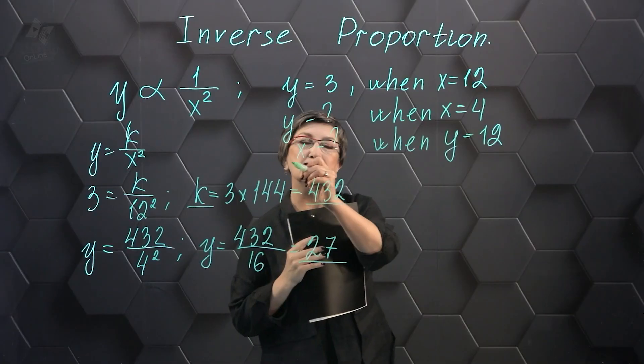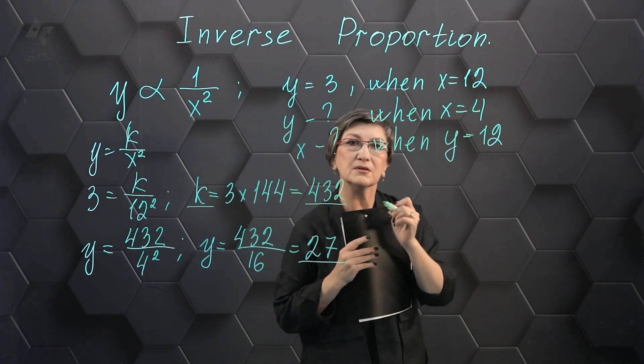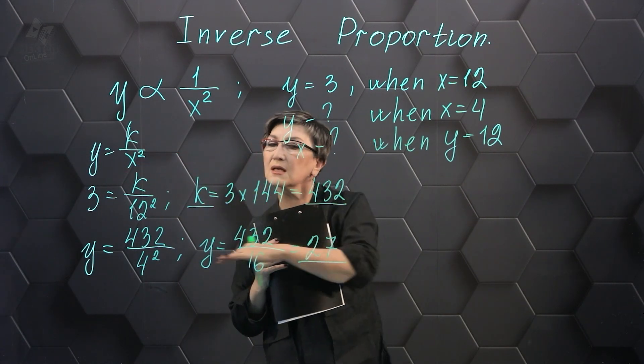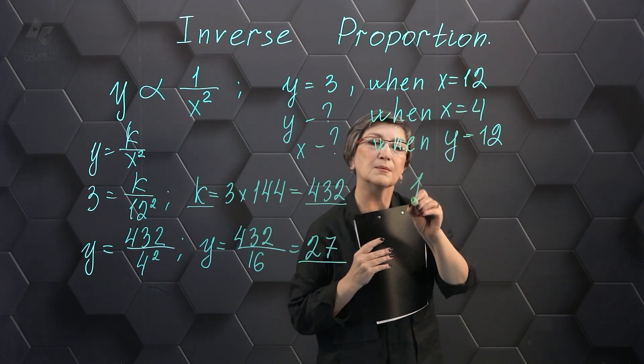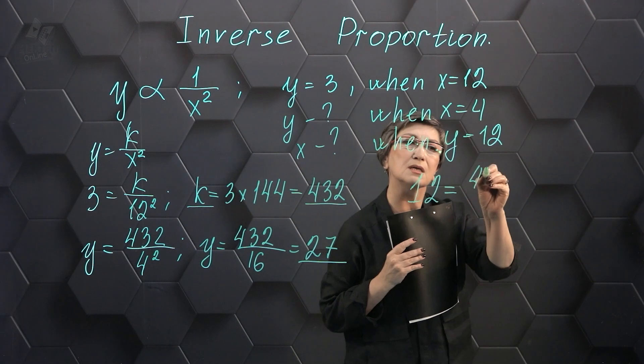Now let's do the last assignment. Let's find the value of X when Y equals 12. Substitute it into our formula. Our coefficient is 432. Instead of Y, I'll substitute 12. 12 equals 432 divided by X squared.